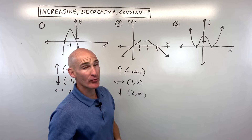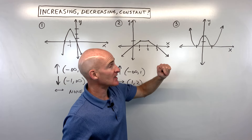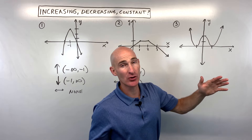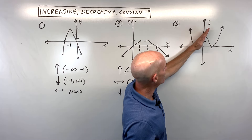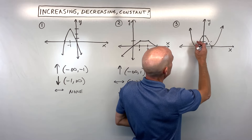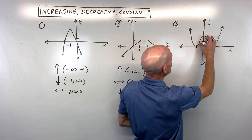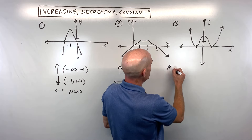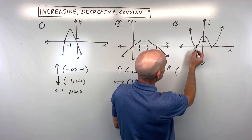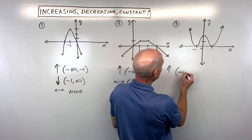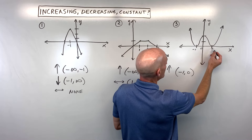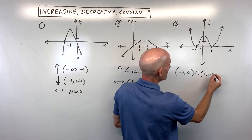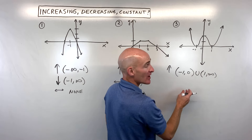What do you think for number three? Where is the graph increasing, decreasing, or constant? This one's a little more challenging. Increasing means going up to the right, like a positive slope. I can see that from negative one to zero and from one onward, it's increasing. So for increasing we're going to write negative one to zero, union one to positive infinity — two intervals united. Make sure you work from left to right, low to high.